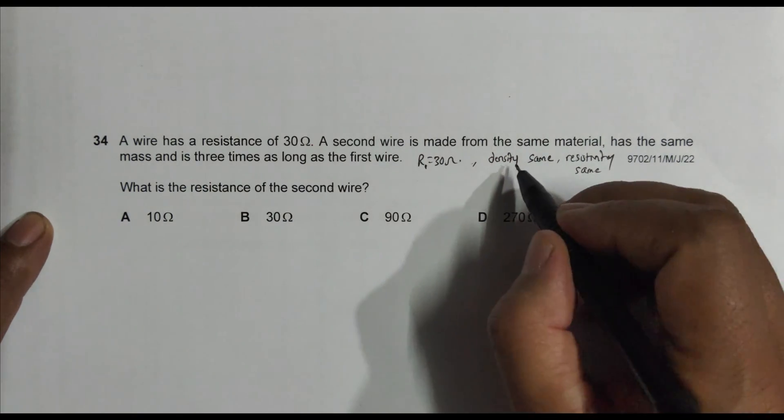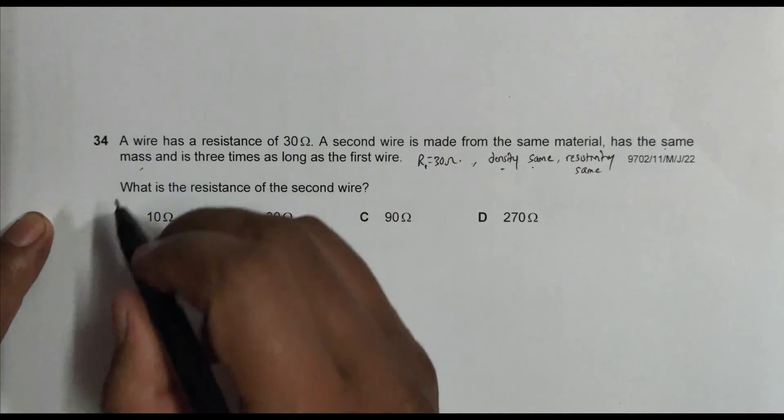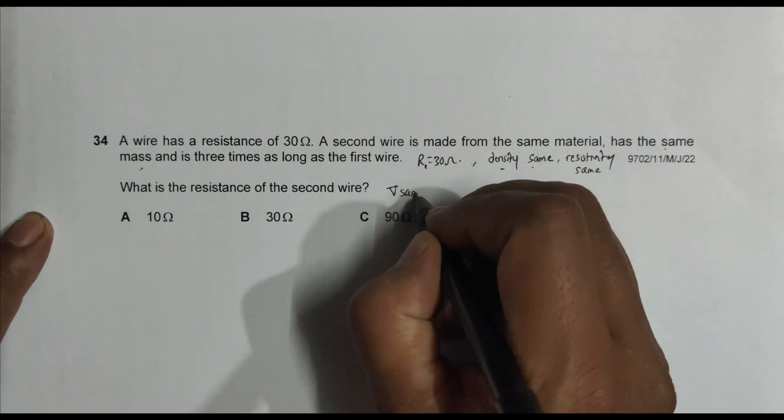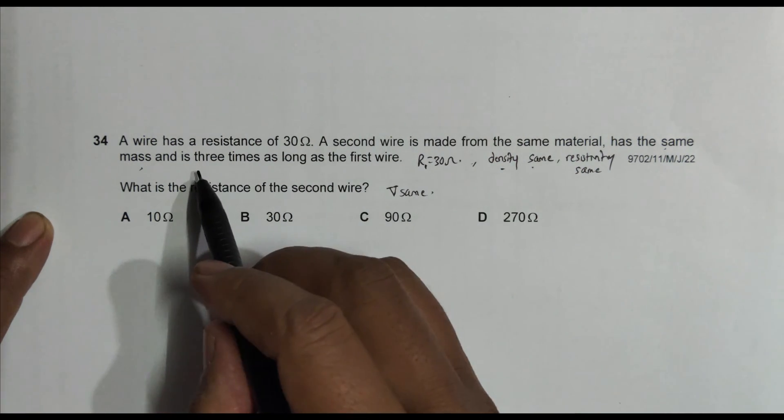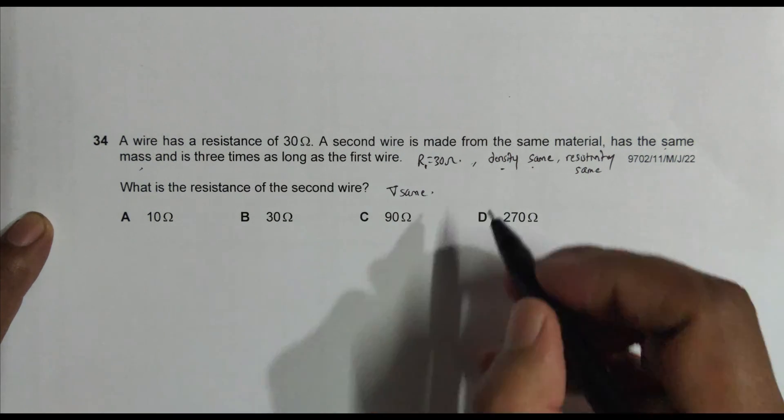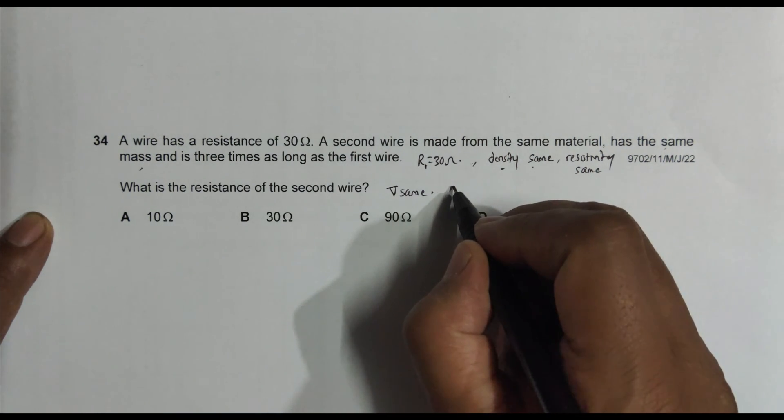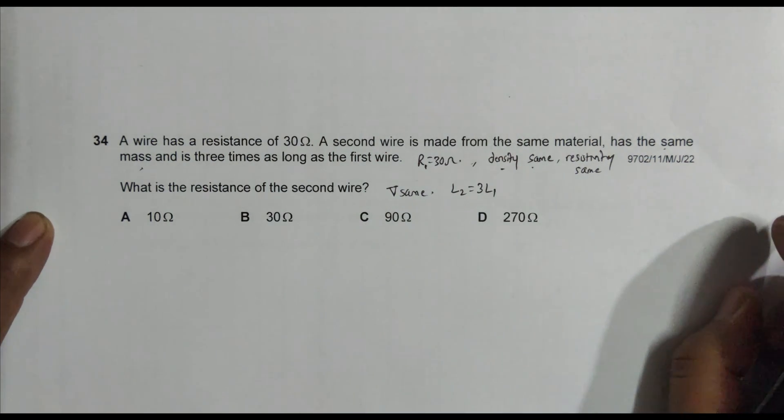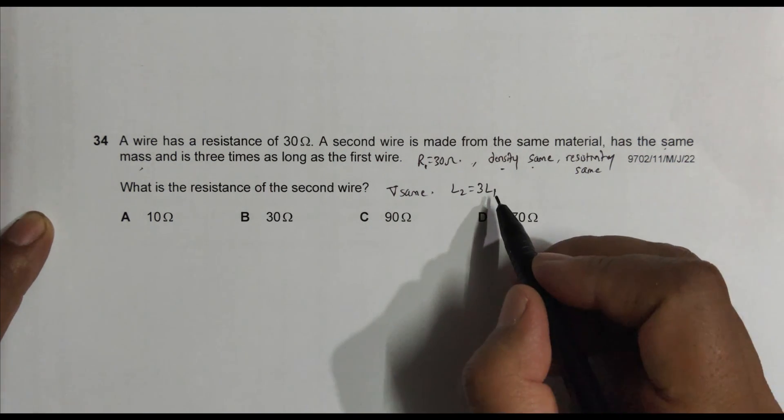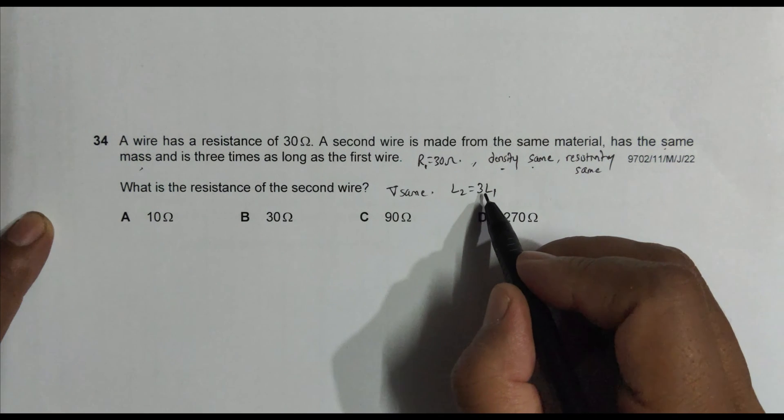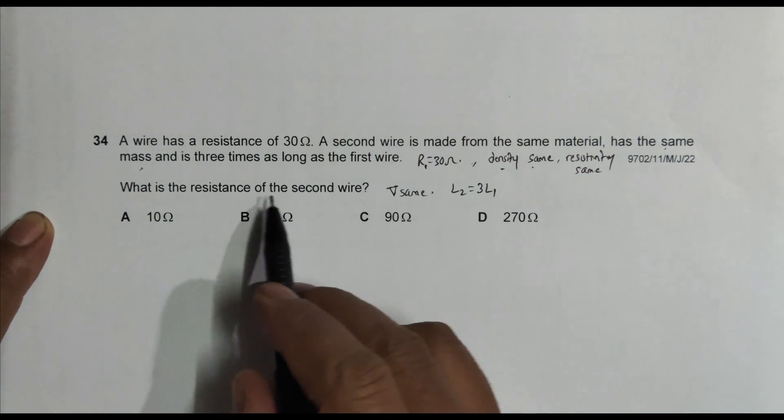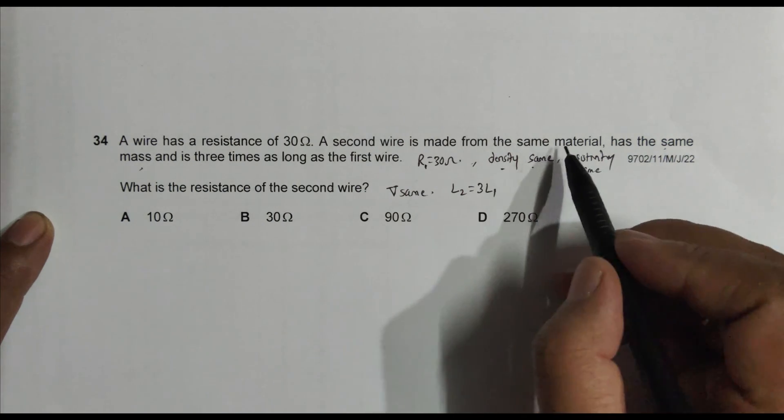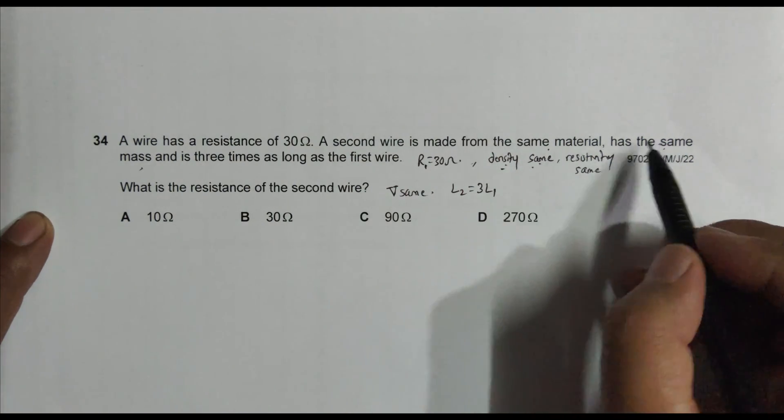Same density and same mass means volume is the same. And it's three times as long as the first wire, so L2 equals three times L1. If L1 is the length of the first wire, L2 has got 3L1. What is the resistance of the second wire? So we have same material, same mass, so same volume.